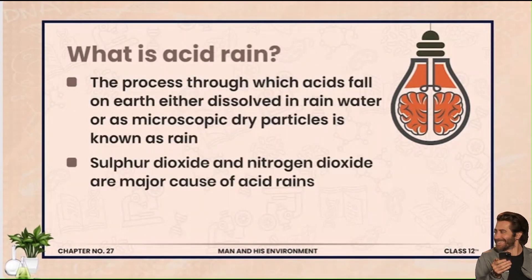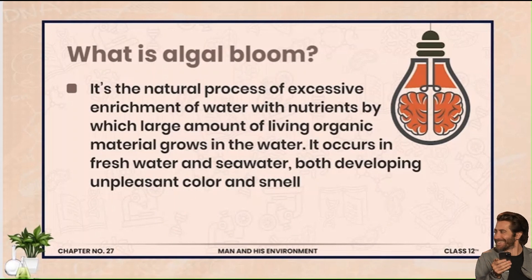Next: what is acid rain? Acid rain ek aisa process hai jis mein acid hamaari zameen mein aata hai. Industries aur fossil fuels ke burn hone se regularly CO2, SO2, NO2 — yani carbon ki oxides, nitrogen ki oxides, sulfur ki oxides — emit hote hain. Jab ye rainwater mein add ho jaate hain, to sulfuric acid, nitric acid ya carbonic acid banti hai. Yeh acid rain humari skin, microorganisms, plants aur aquatic life ko damage karti hai.